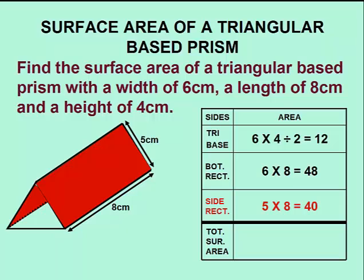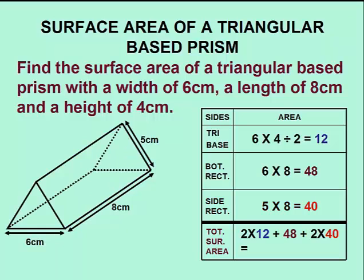To calculate the total surface area, we'll have 2 times 12 for the two triangular bases, plus 48 for the area of the bottom rectangle, plus 2 times 40 for the area of our two side rectangles, giving us a total surface area of 152 square centimeters.